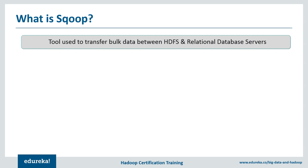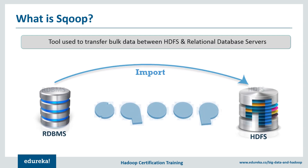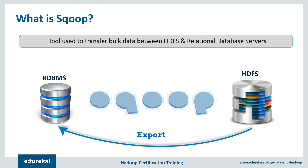Sqoop is a tool used for data transfer between RDBMS like MySQL, Oracle, SQL, etc., and Hadoop like Hive, HDFS, HBase, etc. It is used to import data from RDBMS to Hadoop and export data from Hadoop to RDBMS. Sqoop is one of the top projects by Apache Software Foundation and works brilliantly with relational databases such as Teradata, Netezza, Oracle, MySQL, etc. It uses MapReduce for parallel import/export with fault tolerance. Developers just provide basic information like database authentication, source, destination, and operations — the rest is handled by Sqoop.